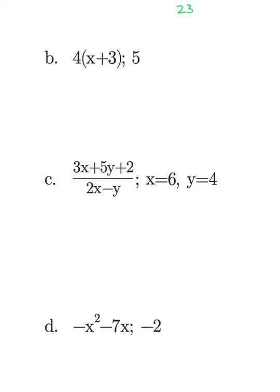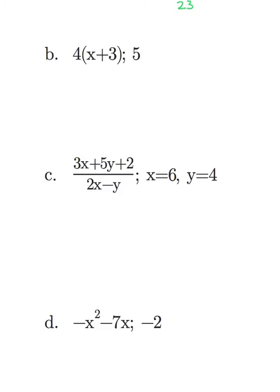If we look at the second example, 4 times the quantity x plus 3, again we have x is equal to 5. So I want to plug 5 in for x. We get 4 times the quantity 5 plus 3. Order of operations for this problem tells us that we want to simplify inside the parentheses first. We get 4 times 8, and then if we multiply we get 32.